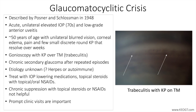Examination of the anterior chamber and IOP between attacks are unremarkable, often leading to confusion and delayed diagnosis. The diagnosis is often one of exclusion, and as such, laboratory testing including viral PCR of aqueous humor for HSV, VZV, and CMV titers may be ordered to exclude infectious uveitis.